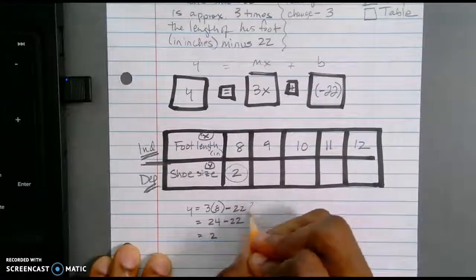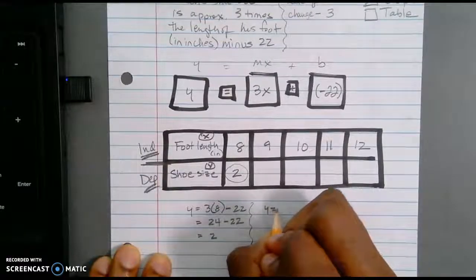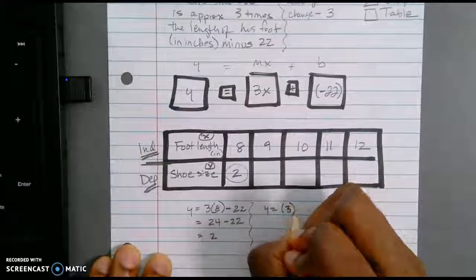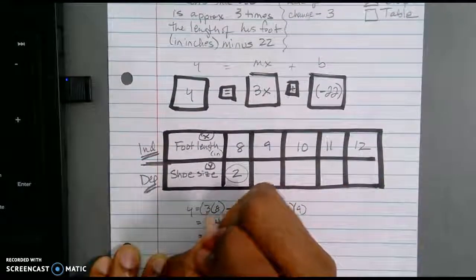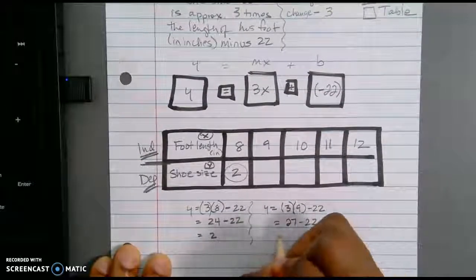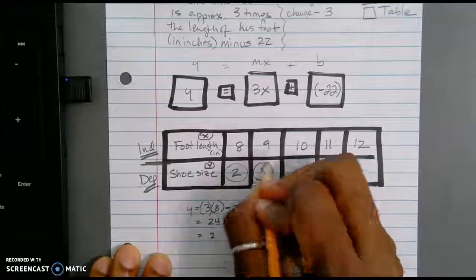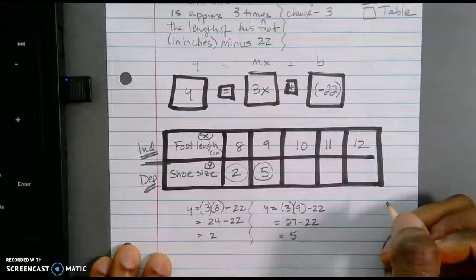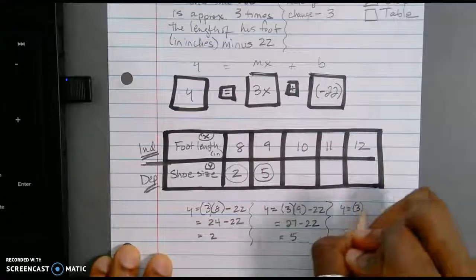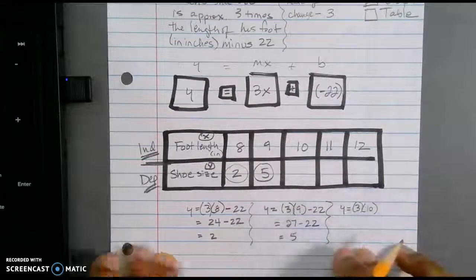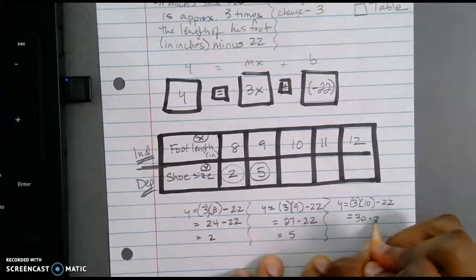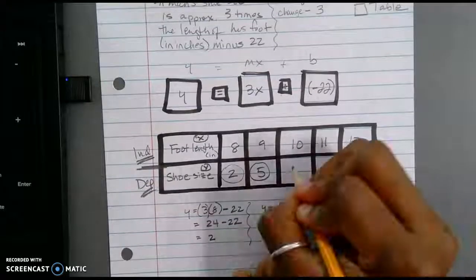What about if I set up my problem, y is equal to 3, I'm just following this up here, y equals 3 times 9, minus 22, 27 minus 22 is equal to 5. So what do we see happening here at this point? You may not see it just yet. We'll go ahead and do another one. So y equals 3 times 10, minus 22, 30 minus 22, is equal to 8. See a pattern yet?